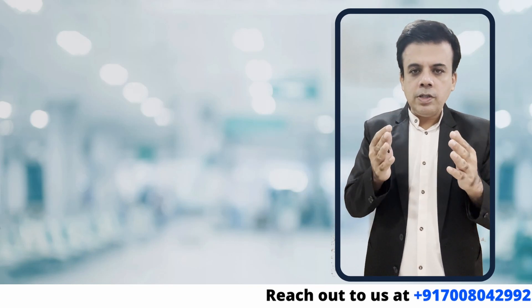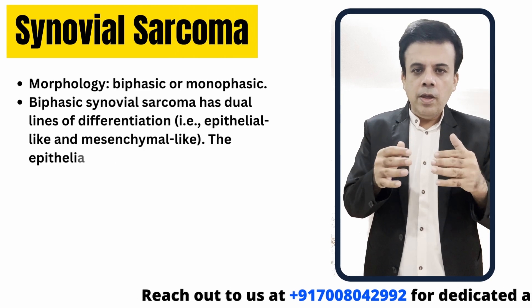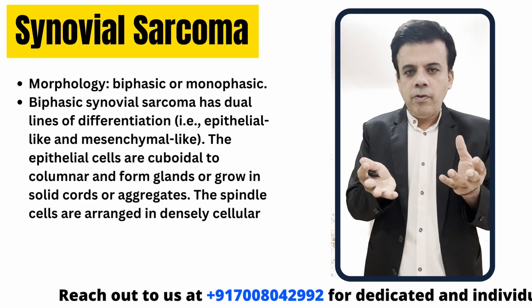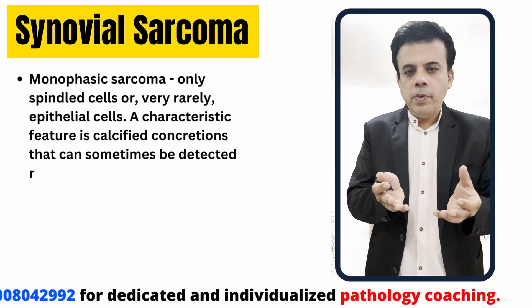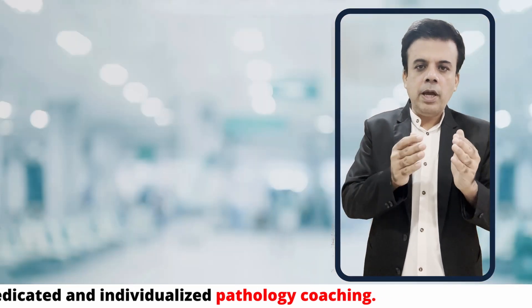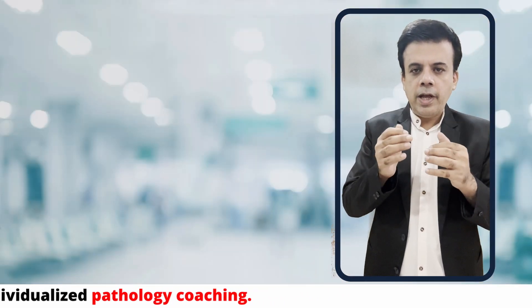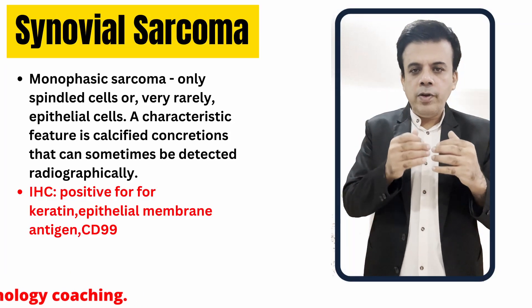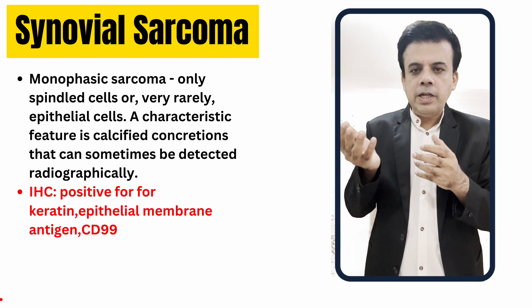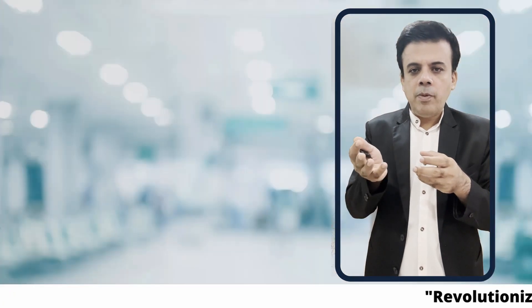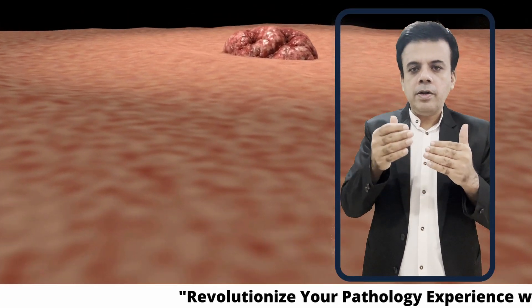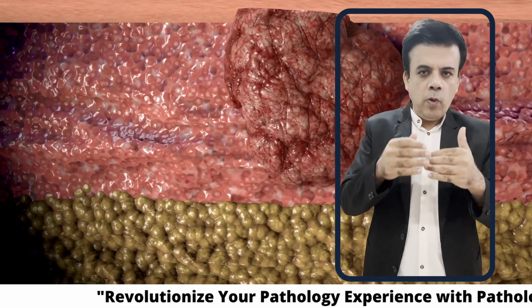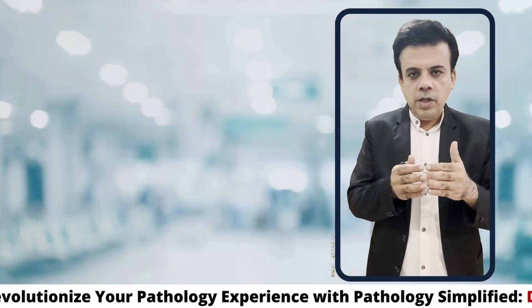Grossly, synovial sarcoma is generally a 3 to 10 centimeter lesion, and on cut section it is quite fleshy and well-delineated. Microscopically, the classic biphasic variant shows epithelial cells forming gland-like structures with a spindle cell stroma. Monophasic variants show either spindle cell stroma only or only gland-forming elements. Rare variants include myxoid, ossifying, and poorly differentiated variants.